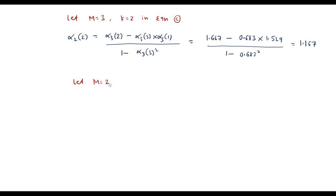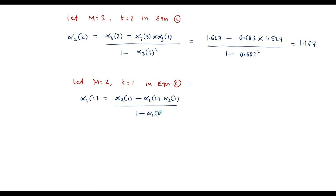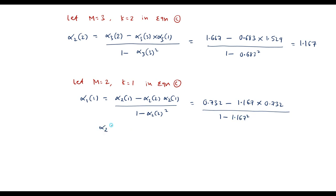Let m=2 and k=1 in equation C. Alpha_1(1) = [alpha_2(1) - alpha_2(2) * alpha_2(1)] / [1 - alpha_2(2)^2] = [1.167 * 0.732] ... solving this we get alpha_1(1) = 0.338. Thus we found all lattice coefficients k1, k2, k3, and k4.